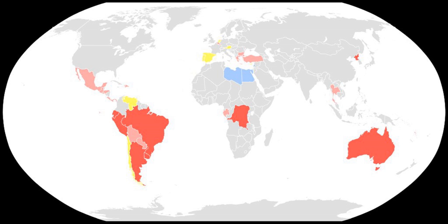Victoria introduced compulsory voting in 1926, New South Wales and Tasmania in 1928, Western Australia in 1936 and South Australia in 1942. It was introduced for federal elections in 1924 for British subjects aged 21 and over, but was not compulsory for Indigenous Australians until 1984. The compulsory voting age was reduced to 18 in 1974. Compulsory voting for national elections was introduced in Australia in 1924, following a pronounced fall in turnout at the 1922 federal election. In the states of Queensland and Western Australia, Indigenous Australians were specifically disqualified, even though they were officially recognised as British subjects. Voting for Indigenous Australians was introduced in 1949, but enrolment was not compulsory for Indigenous Australians until 1984.